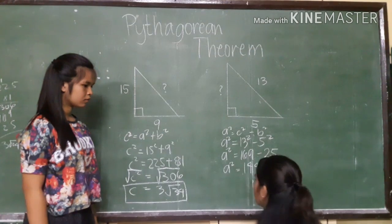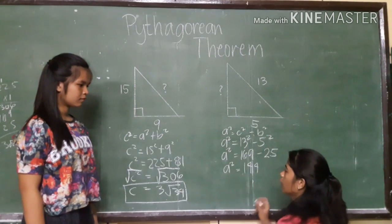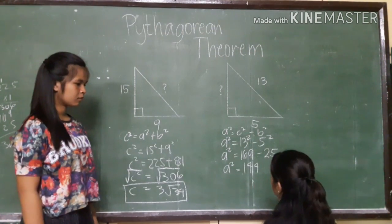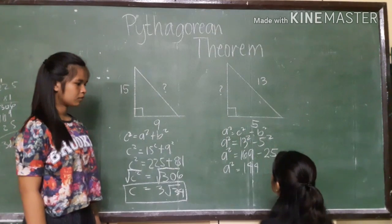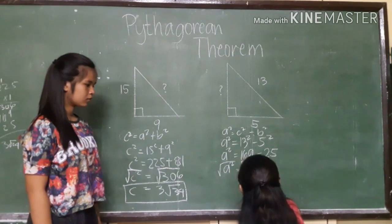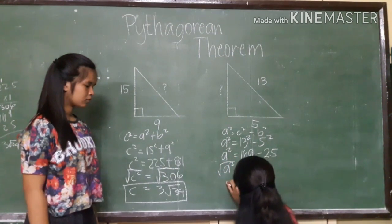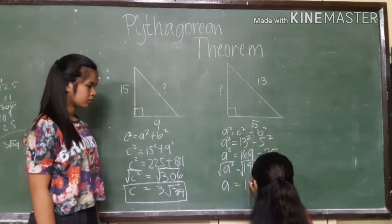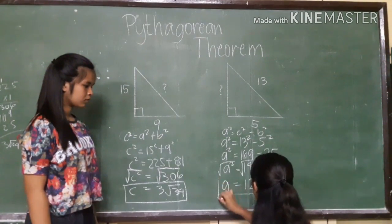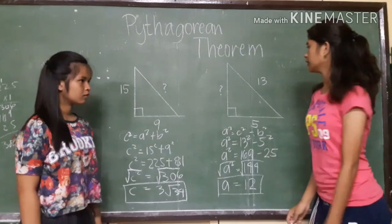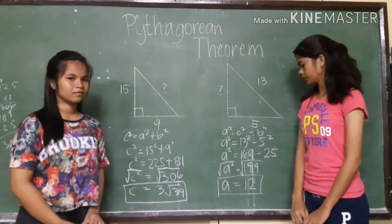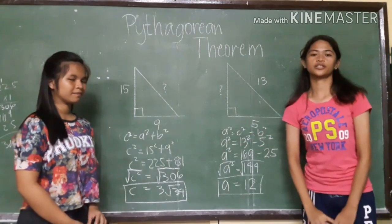To find a by itself, we take the square root of both sides. A is equal to 12. And the length of this right triangle is 12.